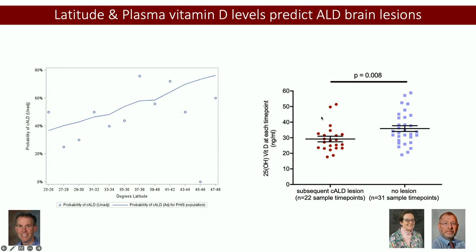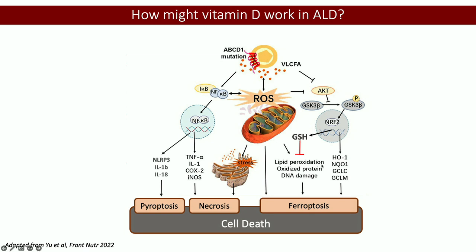I want to point out that this is the level of vitamin D, and each of these patients had at least two measures — so there are ten patients in this group. This patient has pretty high levels of vitamin D and they still got cerebral disease. I want to be clear: we're looking for risk reduction — this is not a cure. What we're shooting for is risk reduction.